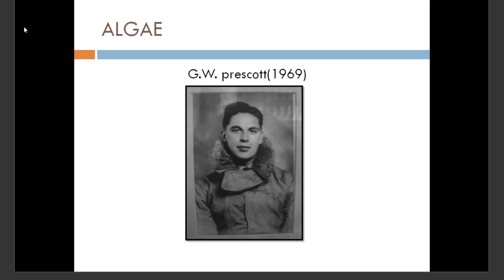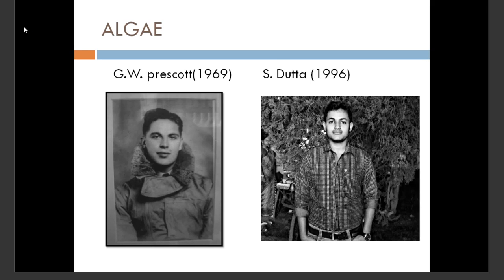According to GW Prescott in 1969, he defined algae as chlorophyll-bearing organisms which are thaloid — that is, having no true roots, stems, leaves, or leaf-like organs.